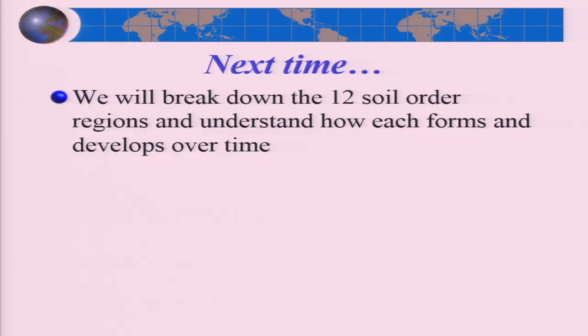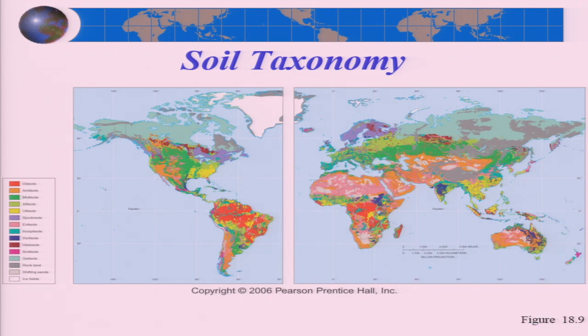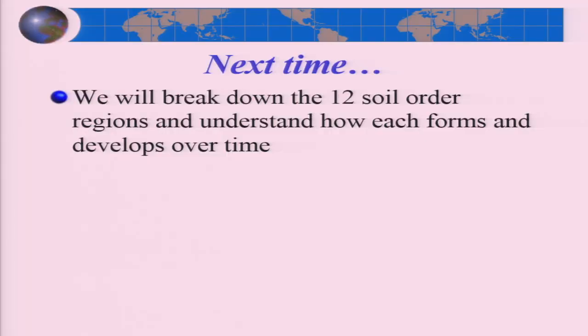In lecture 18, we're going to break down these 12 soil orders into their sub-components, give examples of where they're formed, how they develop, and the types of agriculture you can expect in those areas. That wraps up lecture number 17. I will see you all back for lecture number 18. Have a good day.